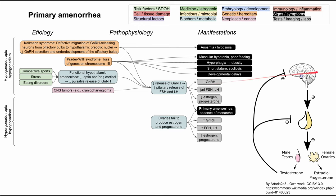Lastly, if you have a problem in the brain — a CNS tumor like a craniopharyngioma or something else affecting the sella turcica, where the pituitary gland resides — you can have decreased release of GnRH or decreased pituitary release of FSH and LH, which can also lead to hypogonadotropic hypogonadism.